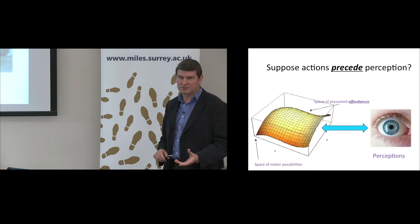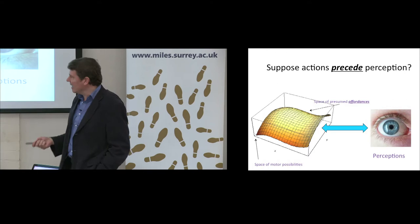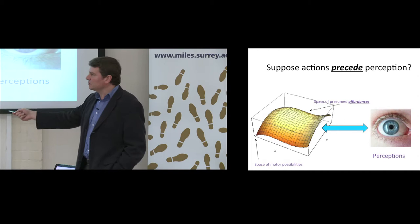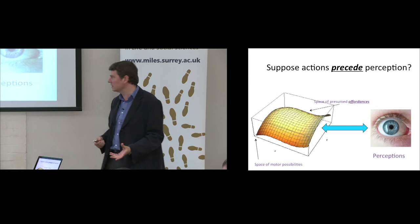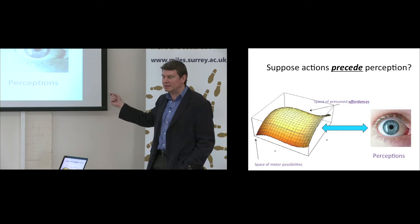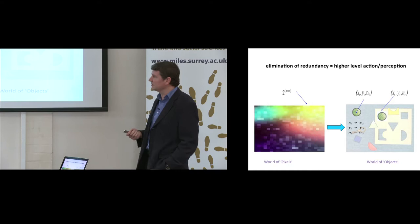Perception-action learning proposes to be an answer to this, and it works from the motto that actions precede perceptions — that actions are in some way more fundamental than perceptions. In formal terms, there is some sort of sub-manifold within the space of possible motor actions that corresponds to the space of possible affordances, the things that the agent thinks it can do in the world. There's a one-to-one mapping between that action space and perceptual transitions — the agent only needs to represent the things that it thinks it can meaningfully change.